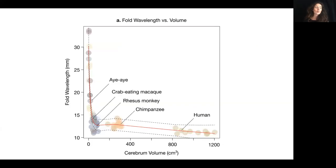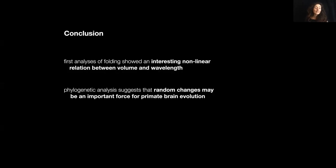Interestingly, we also observed a strong conservation of the fold width, which is very close to one centimeter across all these different primate species, starting from the vervet monkey all the way to the humans. Despite a more than 24-fold difference in volume, we observe a very conserved brain folding width. To conclude, this analysis has shown that there is an interesting nonlinear relationship between volume and wavelength, and also that random changes may be an important force for primate brain evolution.